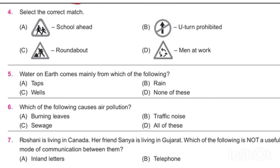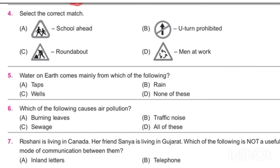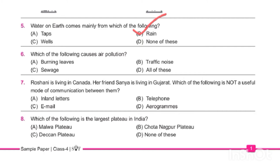Our next question is: select the correct match. The answer is option number A — the school ahead sign. You have noticed this sign before any school. Our next question: water on Earth comes mainly from which of the following? The answer is rain.